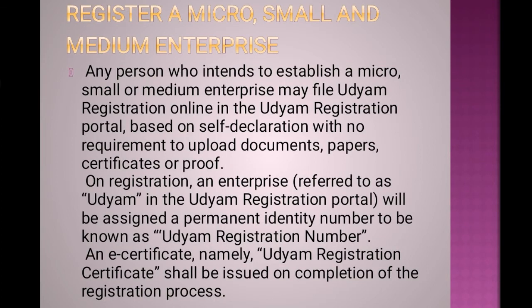To register a Micro, Small and Medium Enterprise: any person who intends to establish a Micro, Small or Medium enterprise may file Udyam registration online in the Udyam registration portal based on self-declaration, with no requirement to upload any documents, papers, certificate or proof. On registration, an enterprise referred to as Udyam in the Udyam registration portal will be assigned a permanent identity number to be known as Udyam Registration Number. An e-certificate, namely the Udyam Registration Certificate, shall be issued on completion of the registration process.